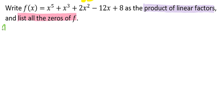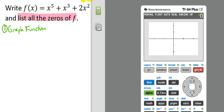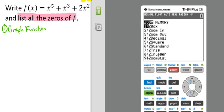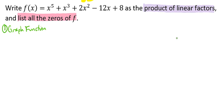The first thing we want to do is graph the function. The reason we're going to graph the function is to get an idea of what zeros we should try to use. So let's pull up our calculator. We've got our function already entered in, and we'll hit graph and zoom out. It looks like negative 2 and positive 1 would be good choices to start with.